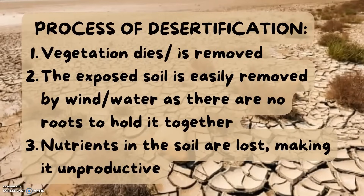Firstly, vegetation either dies or is removed. This leaves exposed soil, which is easily removed by wind or water, as there are no roots to hold it together. Nutrients in the soil are therefore lost, making it unproductive.